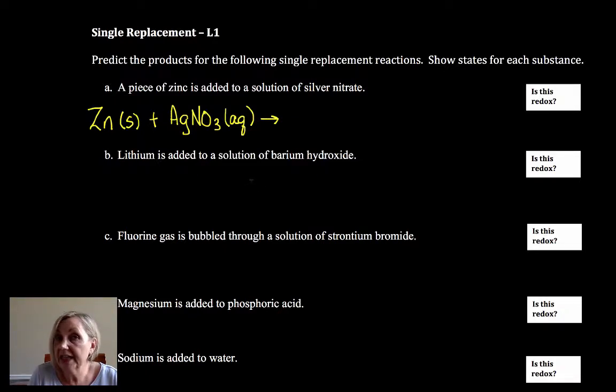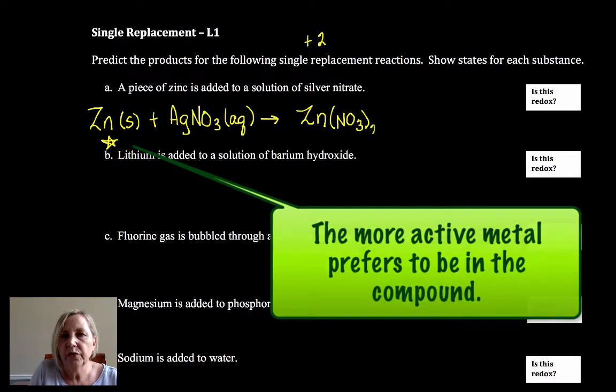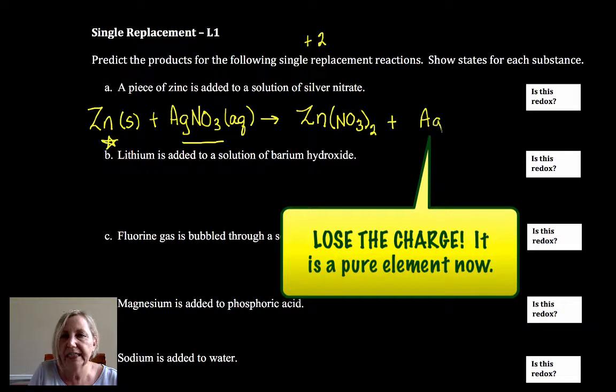When you do this, you want to check your activity series unless you're told all reactions proceed to make product. If you look at your activity series, you would see that zinc is above silver. That means that zinc prefers to be the cation. When zinc becomes a cation, zinc wants to become the plus two cation, which means I would need two nitrates. I'm not looking at the mole ratio of silver ion to nitrate ion to dictate my new product. I have to look at what zinc wants to become. And now that means that silver is all by itself. If it's all by itself, it has an oxidation number of zero.